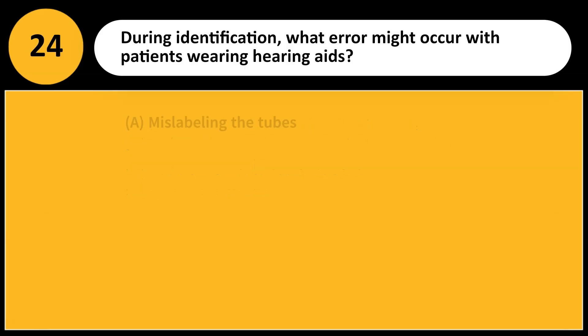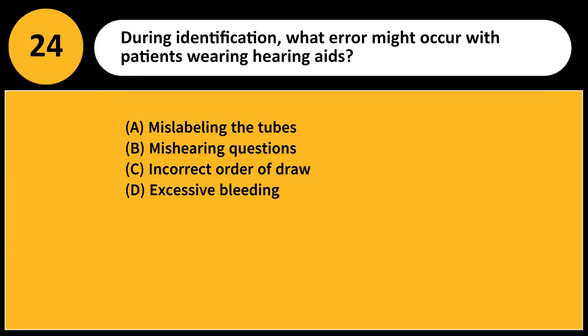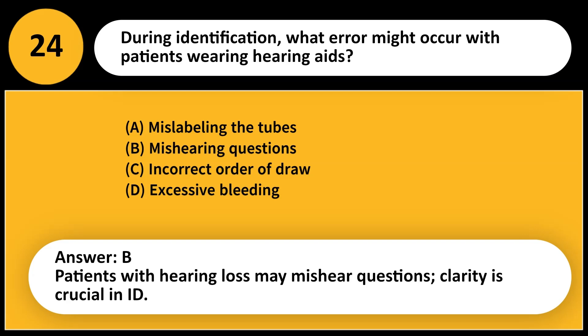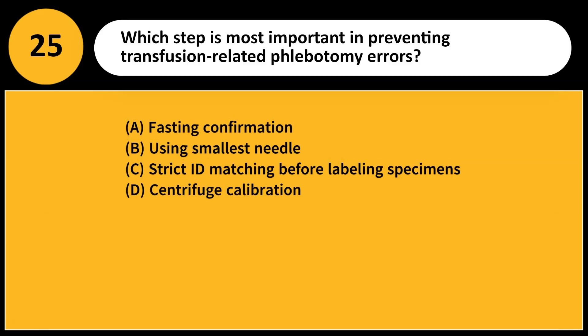During identification, what error might occur with patients wearing hearing aids? A. Mislabeling the tubes. B. Mishearing questions. C. Incorrect order of draw. D. Excessive bleeding. Answer: B. Patients with hearing loss may mishear questions. Clarity is crucial in ID.